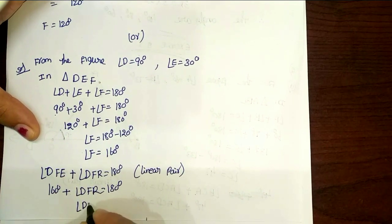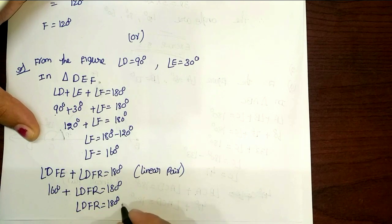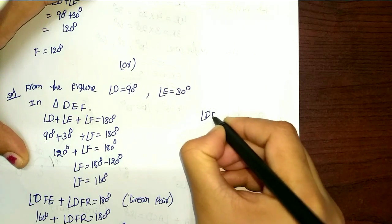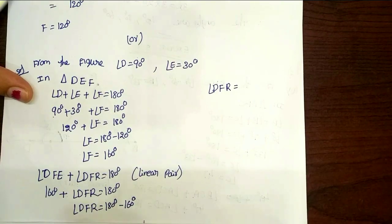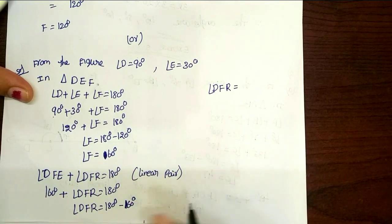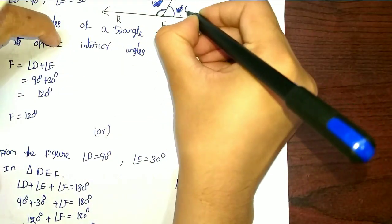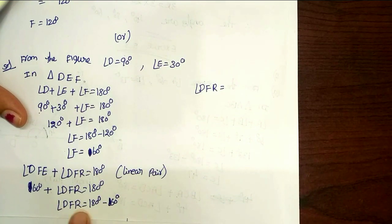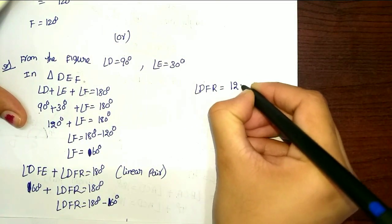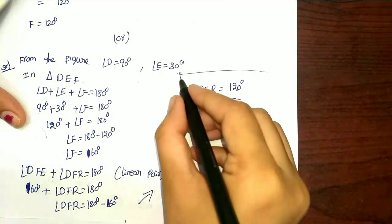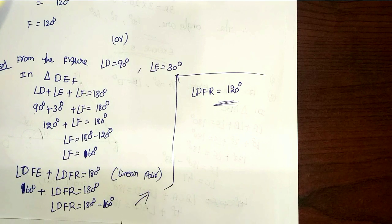Angle D, F, R is equal to 180. Plus 160 — we can transfer to minus 160. So angle D, F, R equal to... Sorry, that is 60. I obtained my angle D, F here is 60. So angle D, F, R equal to 180. That's the answer.